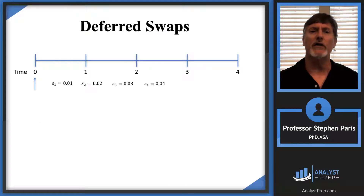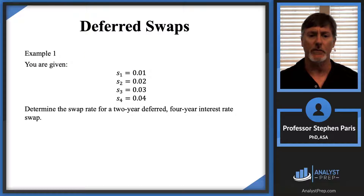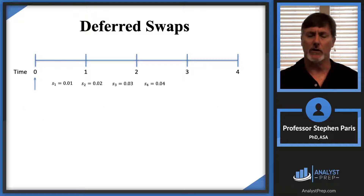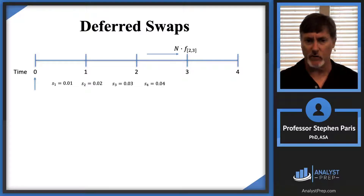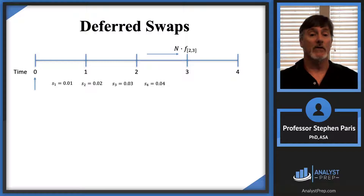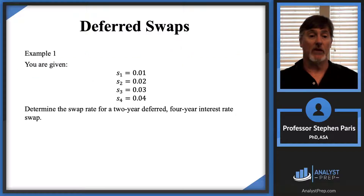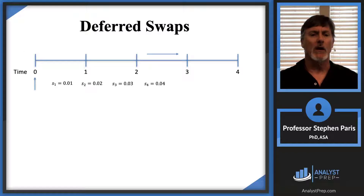What does that mean? We have a four-year interest rate swap, but we're not going to do anything for two years — that's what 'two-year deferred' means. Then we start swapping after two years. At time three, the interest payment would be the notional amount times the forward rate from time two to time three. The problem doesn't mention a notional amount, so just assume it's constant.